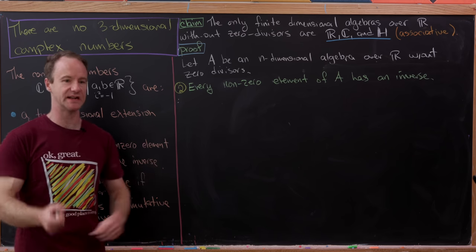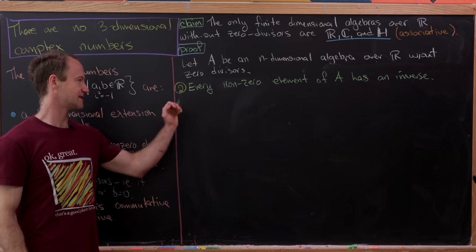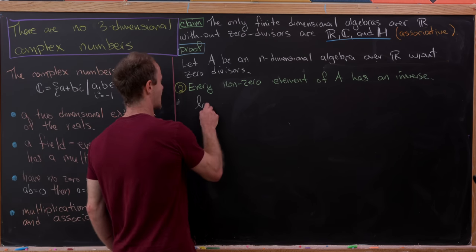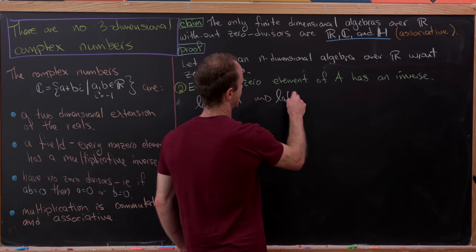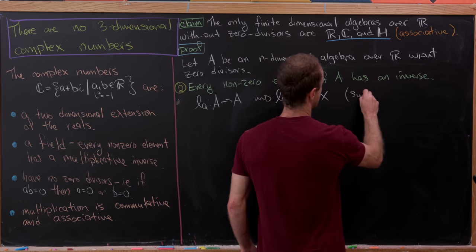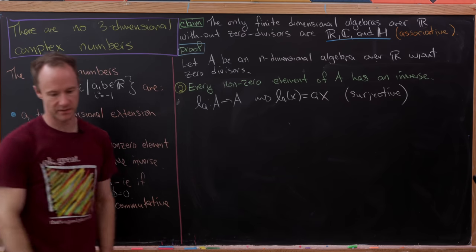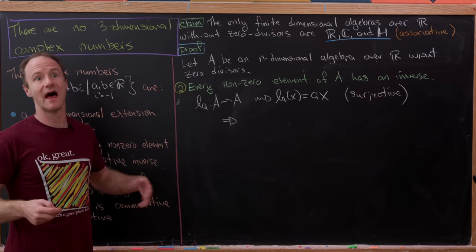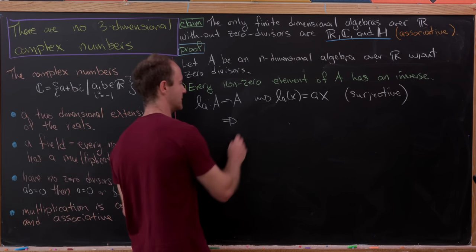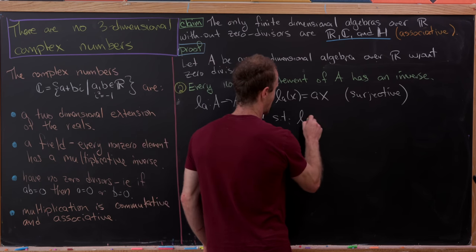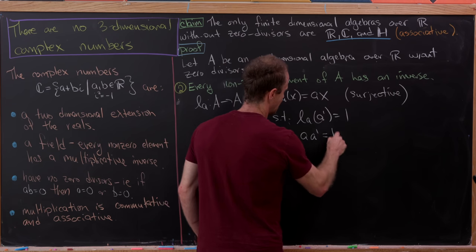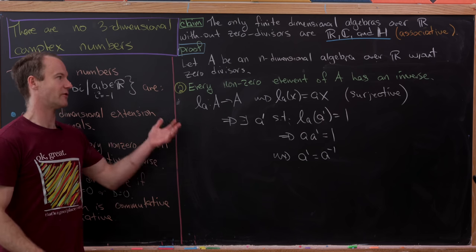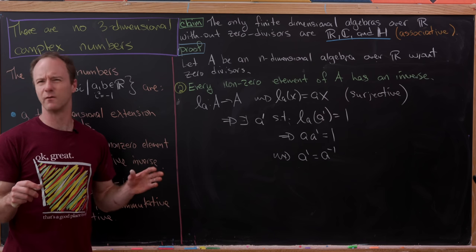Something that goes hand in hand with a multiplicative identity is the notion of multiplicative inverses — that's the second step. We'll show every non-zero element of A has a multiplicative inverse. The map L_a from A to A is surjective by our previous argument, so we can land on the multiplicative identity 1. There exists a' such that L_a(a') = 1, meaning a times a' = 1, so a' is simply a inverse.